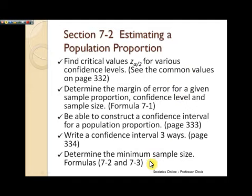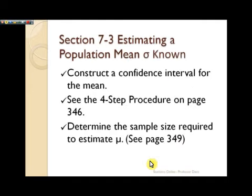Section 7.3 now, that's really kind of the same idea, only now we want to estimate the population mean mu. And this is under the circumstance that the population standard deviation is a known value. That's sigma, the population standard deviation. And also, it's also good for large samples if we have sample sizes above 30. So we want to be able to construct a confidence interval for the mean, the four-step procedure. That's on page 346. Make sure you look over that. The same idea using different statistics.